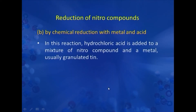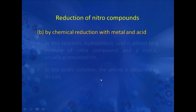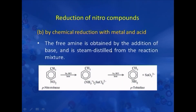The second method of reduction is via metal and acid. In this reaction, hydrochloric acid is added to a mixture of nitro compound and a metal, which is usually granulated tin. In the acidic solution, the amine is obtained as its salt, and the free amine is then obtained by the addition of base. Para-nitrotoluene upon treatment with tin and HCl forms the salt, which upon treatment with base generates the free amine, which is then steam distilled from the reaction mixture.